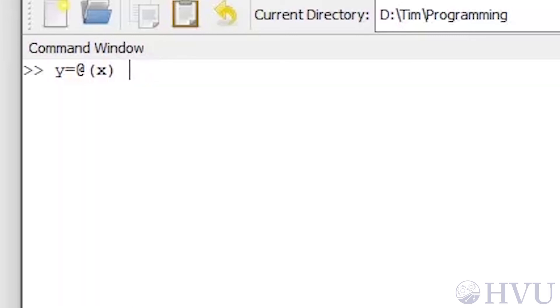Then comes the function to be evaluated, x dot caret two plus one. Now I can use the syntax quad of y comma zero comma one. The result returned is the same as in the previous demo.